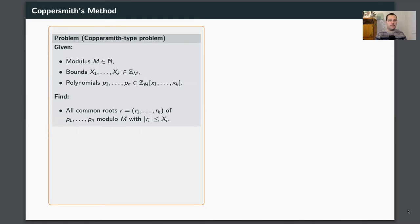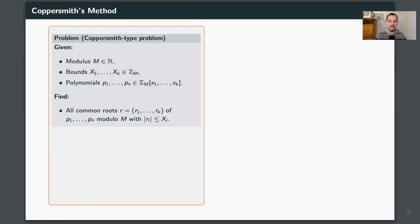This attack is based on Coppersmith's method, a famous algorithmic technique to solve so-called Coppersmith-type problems. We are given a modulus m, some bounds x1 up to xk, and a bunch of polynomials p1 up to pn in k variables, defined modulo m. We want to find all common roots of these polynomials modulo m, with the absolute values of the root components upper bounded by the bounds xi. In general, these problems can be very hard. But Coppersmith discovered that if the bounds are sufficiently small, these problems can become easy — and the smaller the bounds, the better.